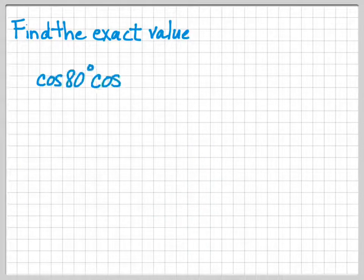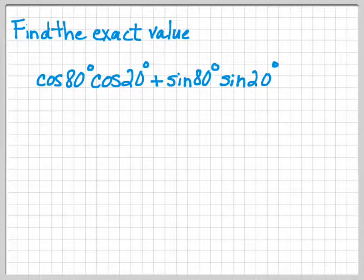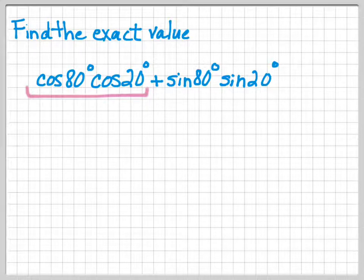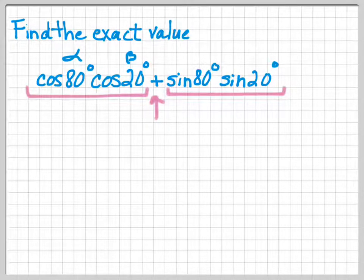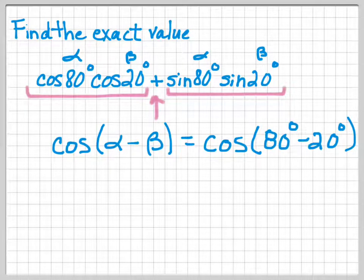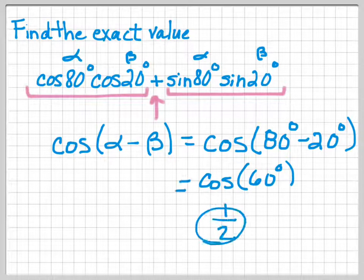Find the exact value of cosine of 80 degrees times cosine of 20 degrees plus sine of 80 degrees times sine of 20 degrees. Once again, you're looking for patterns — you've got to memorize these so that you can look for the patterns. The pattern here is cosine times cosine plus sine times sine, which is the cosine of a difference. So alpha is 80, beta is 20, and it fits into cosine of alpha minus beta, which would be cosine of 80 minus 20, which simplifies to cosine of 60, and cosine of 60 is 1/2.